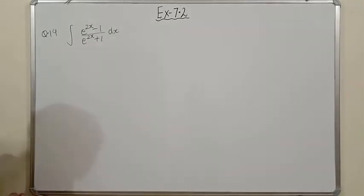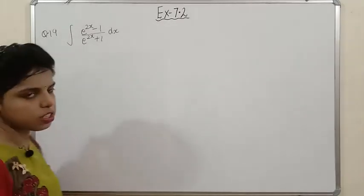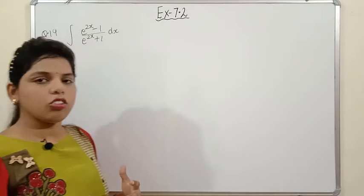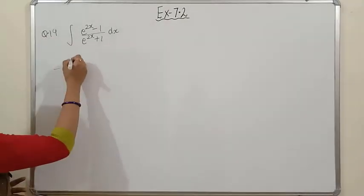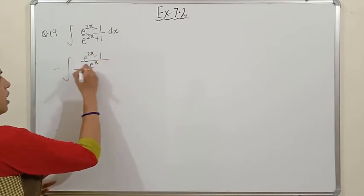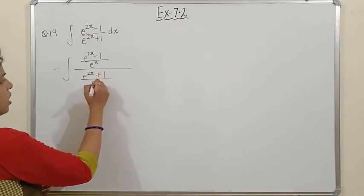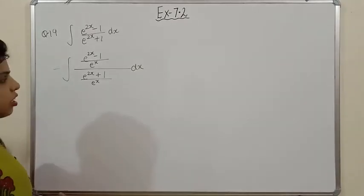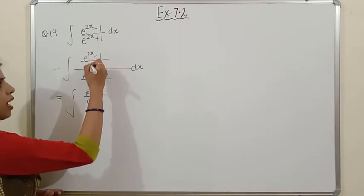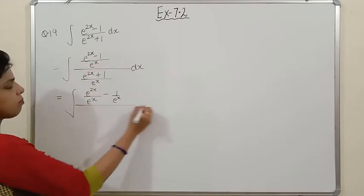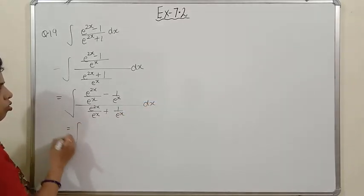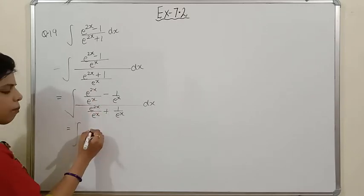Question 19: integration of (e^2x − 1)/(e^2x + 1) dx. The function and derivative are not immediately obvious. To make them visible, divide numerator and denominator by e^x. Splitting the numerator: e^2x/e^x − 1/e^x = e^x − e^(−x). Similarly the denominator becomes e^x + e^(−x).